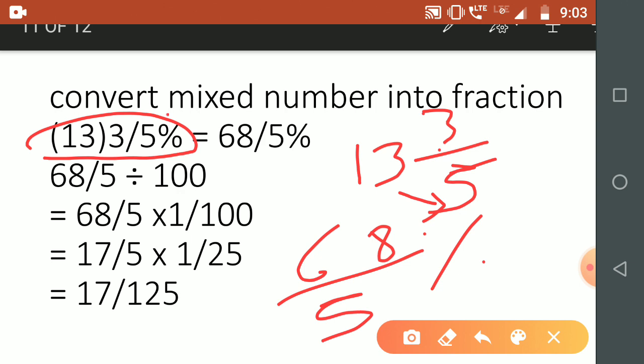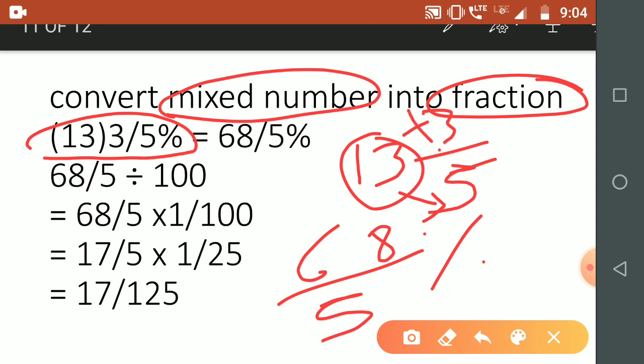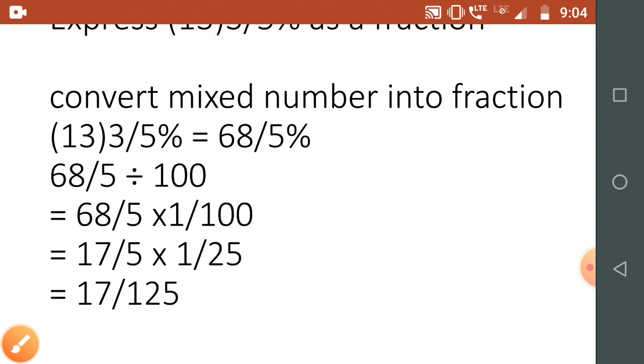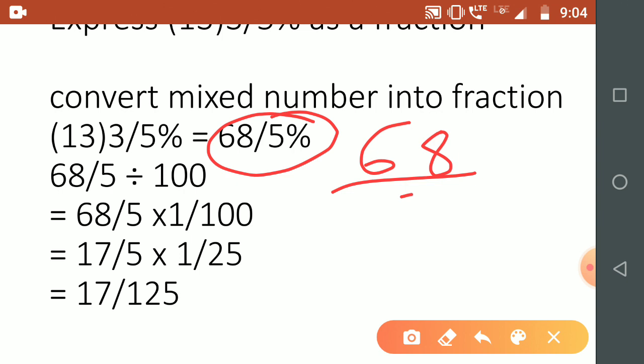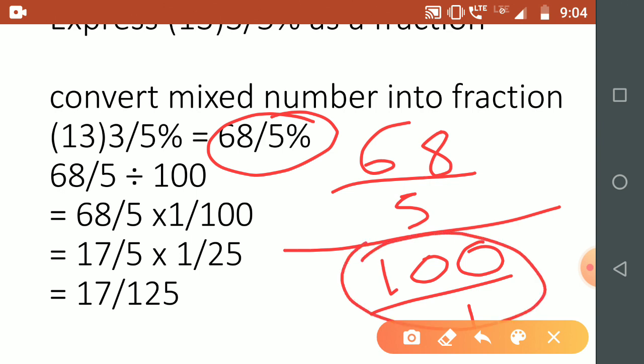First we need to convert the mixed number into fraction number. Denominator multiplied by the side number and added to the numerator, that will give you the fraction number 68 by 5. Now this 68/5 percentage number, you have to convert it into fraction number. So 68/5 whole divided by 100.